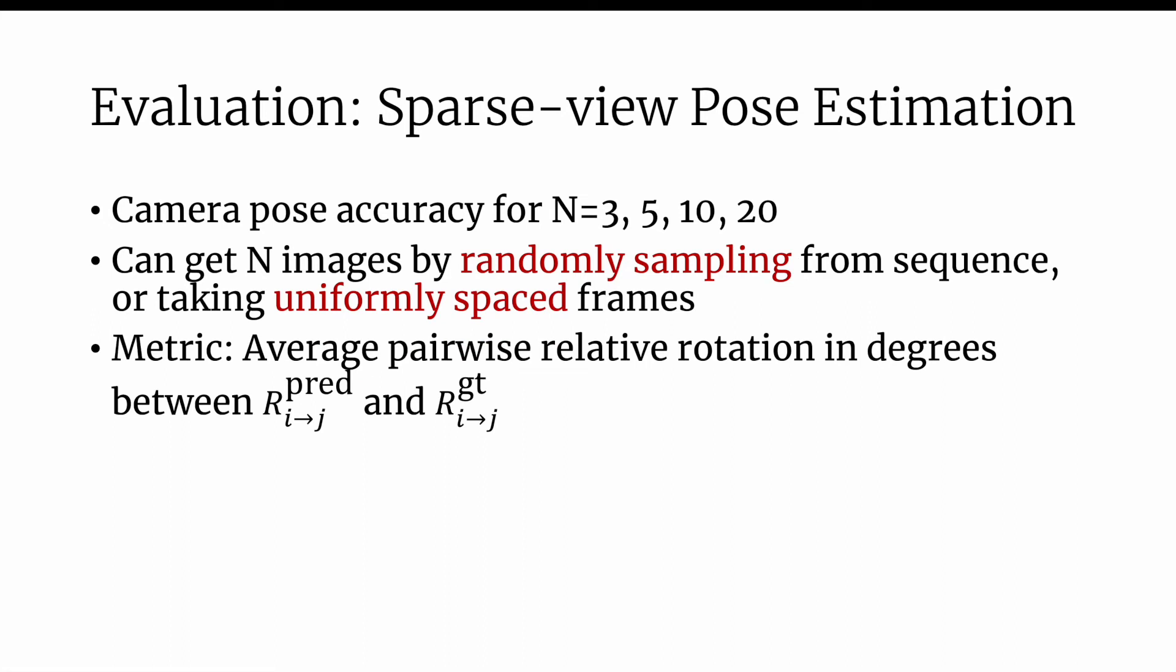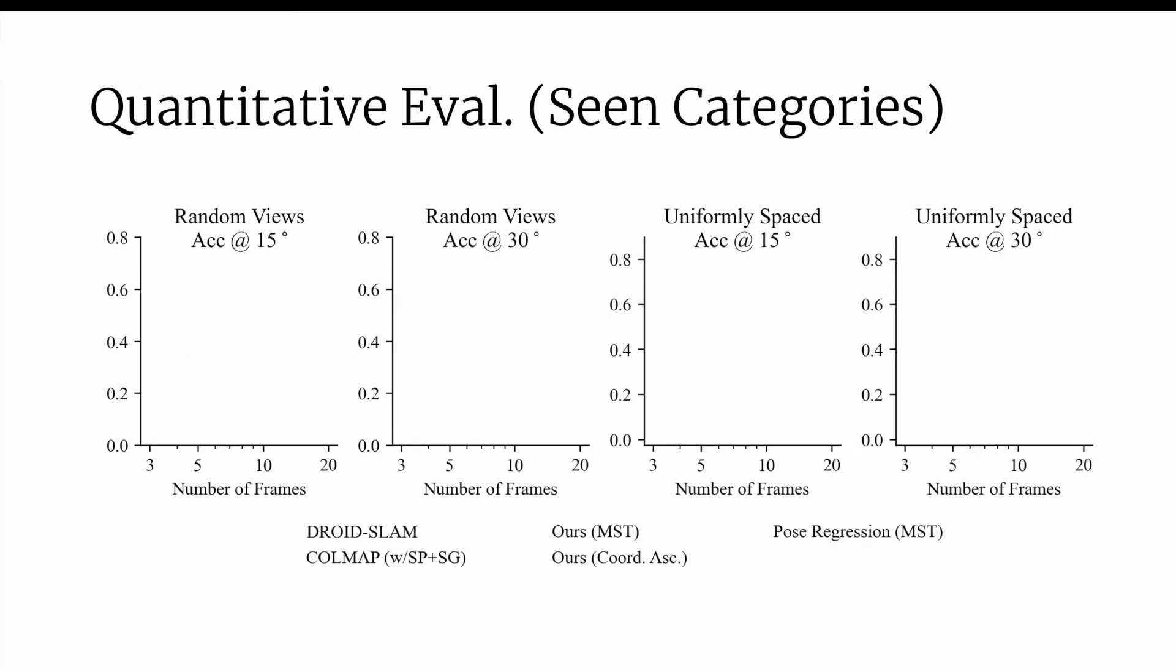We evaluate the average relative rotation between the ground truth and predicted relative rotations. We evaluate the proportion of relative poses that are within 15 and 30 degrees of the ground truth for both randomly sampled and uniformly spaced sequences. We note that pose errors within roughly 30 degrees are usually able to be optimized out of using techniques such as differentiable rendering.